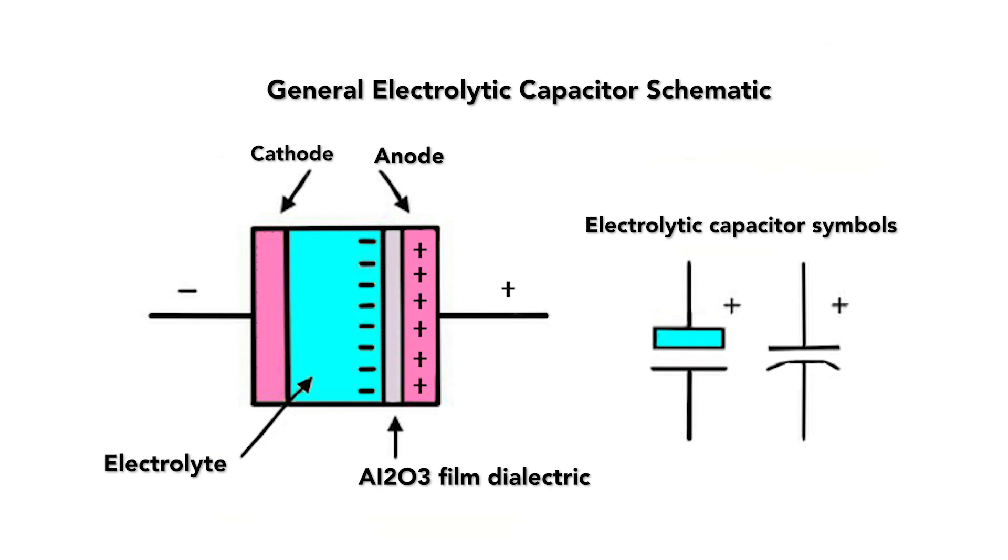Applying a positive voltage to the tantalum anode material in the electrolytic bath forms the oxide barrier layer that serves as the dielectric. Its thickness is proportional to the applied voltage. The second aluminum foil is called a cathode foil and serves as the electrical connection to the negative terminal of the capacitor.